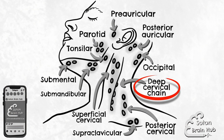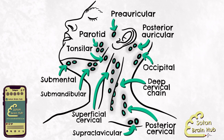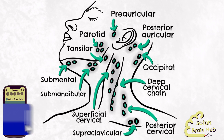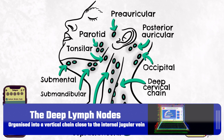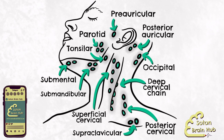We can now turn our attention to the deep cervical lymph nodes. These nodes go by a few different names, but in this video we'll refer to a group of upper deep nodes and a group of lower deep nodes. Deep cervical nodes receive all of the lymph from the head and neck, either directly or indirectly from the superficial lymph nodes. They are organised into a vertical deep cervical chain located close to the internal jugular vein within the carotid sheath. There are other important deep cervical nodes outside of the deep cervical chain that we're now going to take a closer look at.